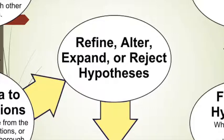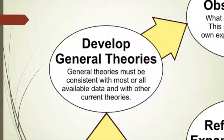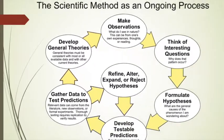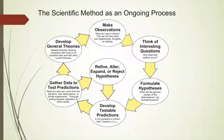We have to develop a new experiment and gather new data based on that experiment. After we finally get the data that supports our idea, we develop general theories. General theories must be consistent with most or all available data and with other current theories — they have to be backed up by previous discoveries. All those steps together make up the modern version of what Ibn al-Haytham proposed 1,000 years ago, and we use this to explain the world around us.